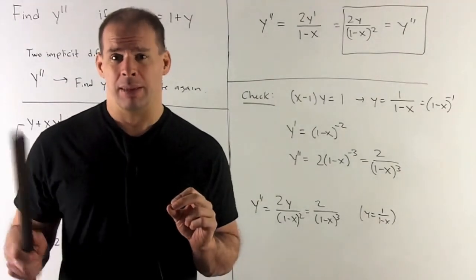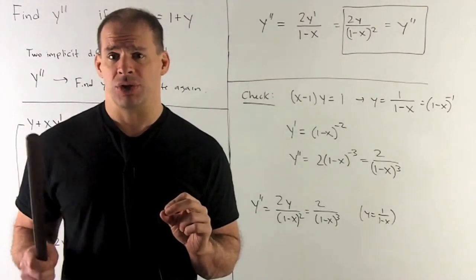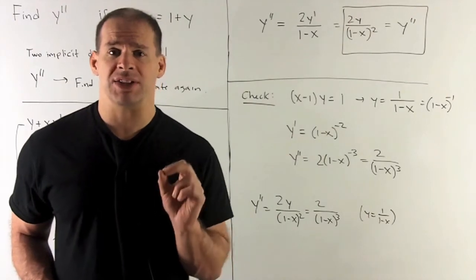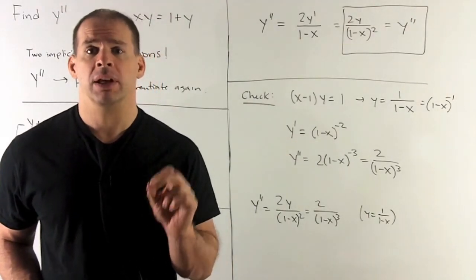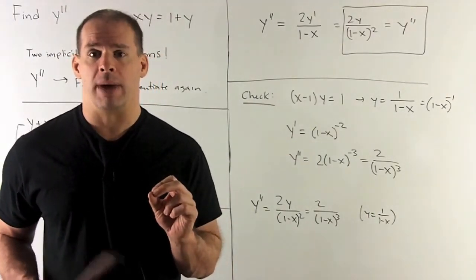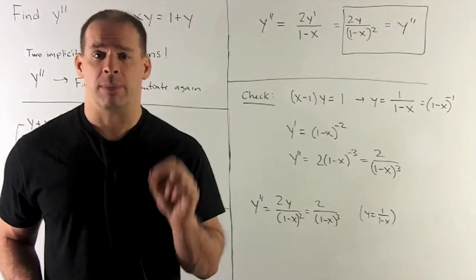For y prime, we bring the minus 1 down. It turns the exponent into a minus 2. Derivative of the inside is minus 1. It's going to give me 1 over 1 minus x quantity squared for my first derivative.